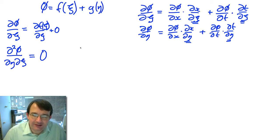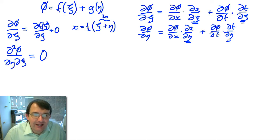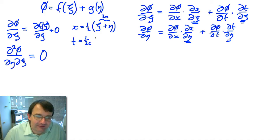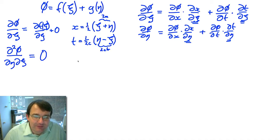We need to rearrange our expressions to get x in terms of eta and psi. Since psi equals x minus ct and eta equals x plus ct, adding them gives 2x, so x equals one-half (psi plus eta). For t, eta minus psi gives x plus ct minus (x minus ct), the x's cancel and we get 2ct, so t equals 1 over 2c times (eta minus psi). These are our expressions for x and t in terms of psi and eta.